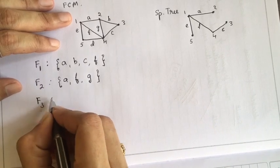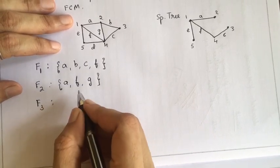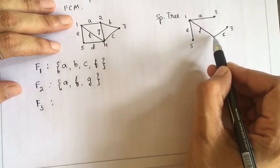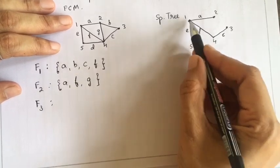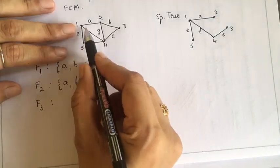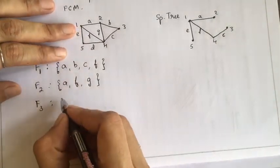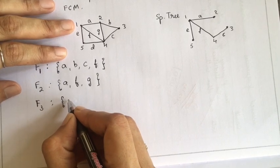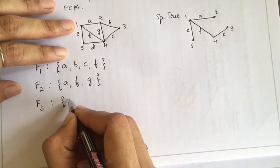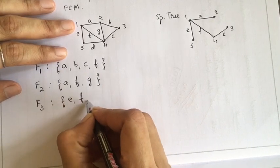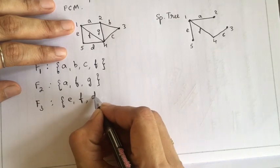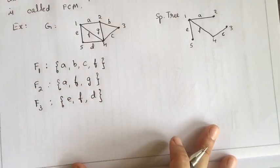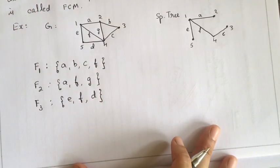One more fundamental circuit can be written by adding another chord to the spanning tree. This gives the fundamental circuit formed by edges E, F, and D. So these three are the possible fundamental circuits.